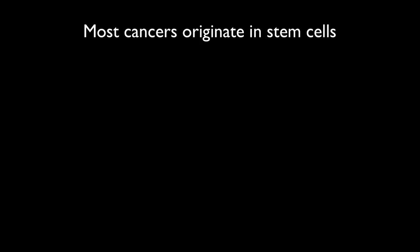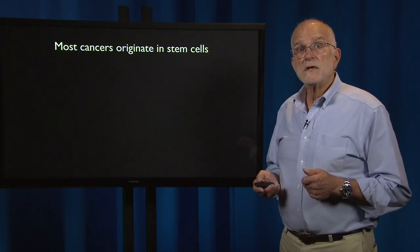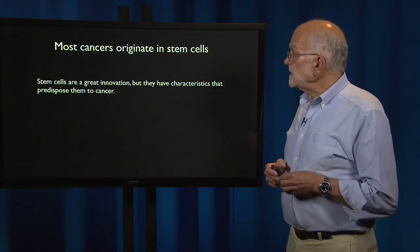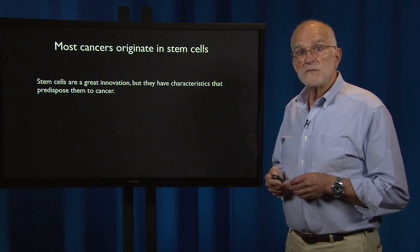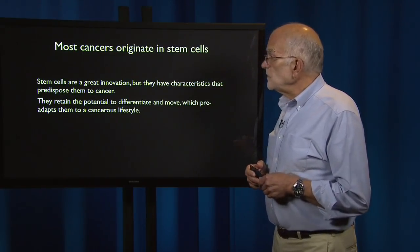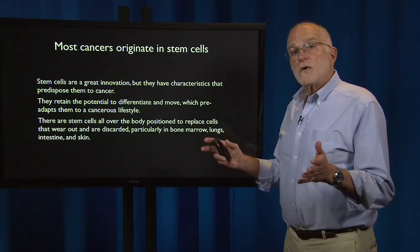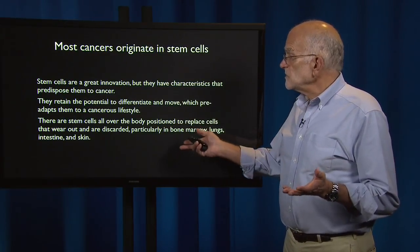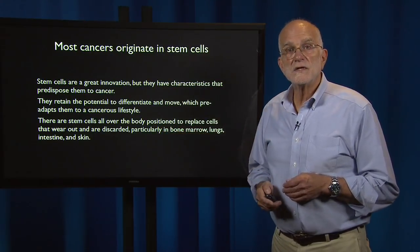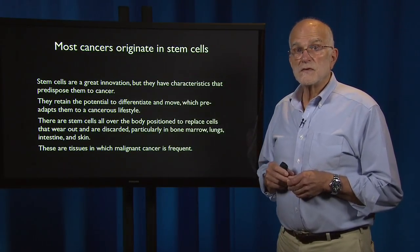The second ancient vulnerability in patients is stem cells. Stem cells originated with multicellularity — they're a great innovation, but they have characteristics that predispose them to cancer. They retain the potential to differentiate and move, which pre-adapts them to a cancerous lifestyle. There are stem cells all over the body positioned to replace cells that wear out, particularly in bone marrow, lungs, intestine, and skin — and those are the tissues in which malignant cancer is most frequent.